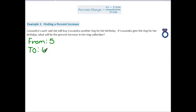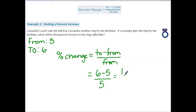By identifying these two elements we're then able to just plug these numbers into the percent change formula. So we're going to start with the formula percent change is equal to two minus from over from. At this point it's just a matter of plugging in what we already identified as to and from. So my two is six, my from is five, so we have six minus five divided by five giving us one fifth, and if I divide these I get point two and that is twenty percent. So the answer to this question is her ring collection will have a twenty percent increase.